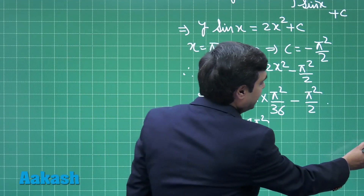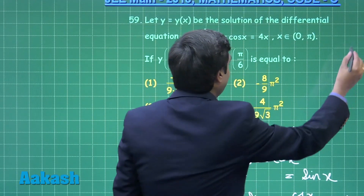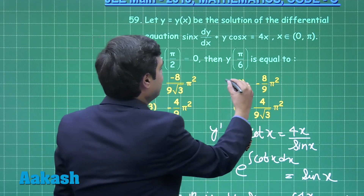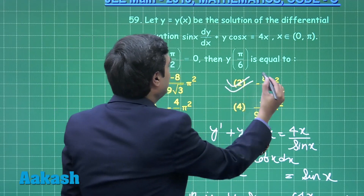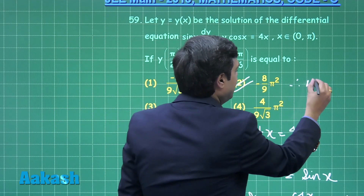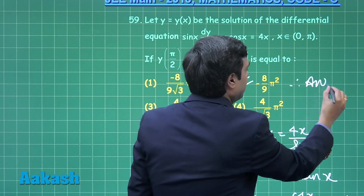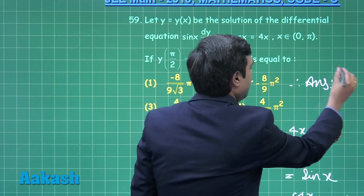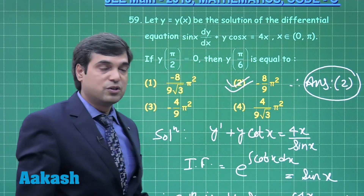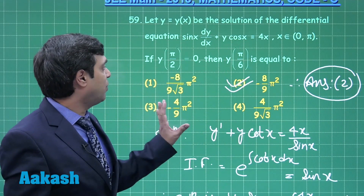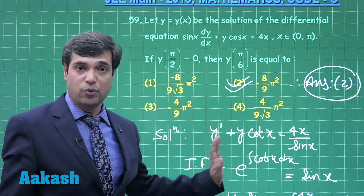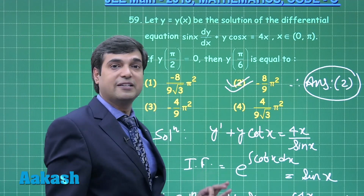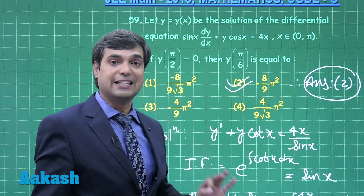From the given options, -8π²/9 is option number 2. Hence, the correct answer is option 2. This was a question from differential equations. Now moving to the last question of this paper, question number 60.